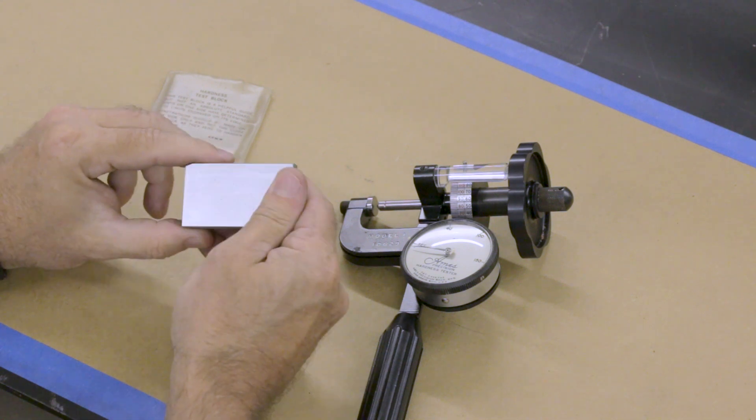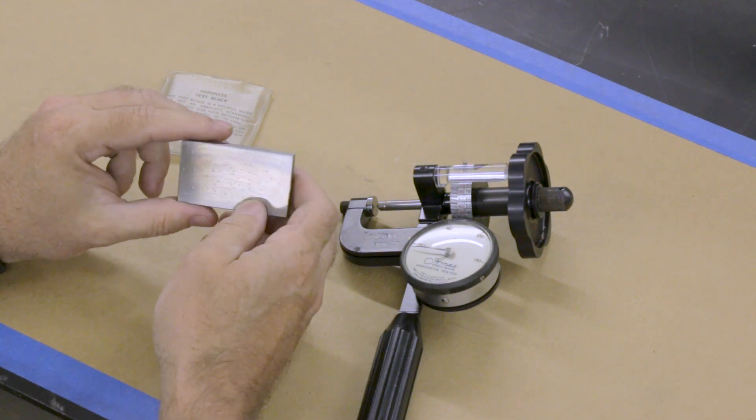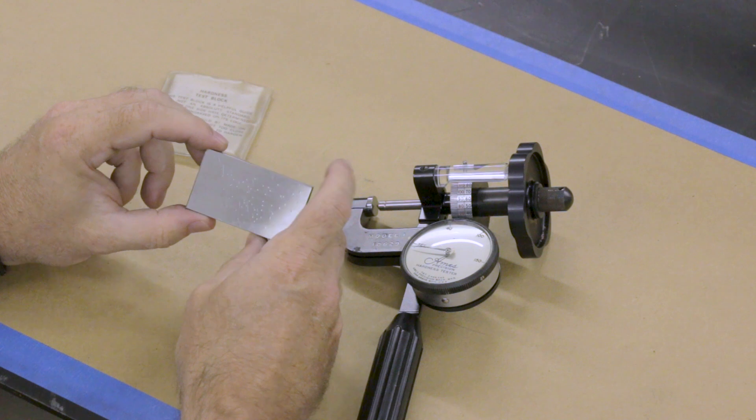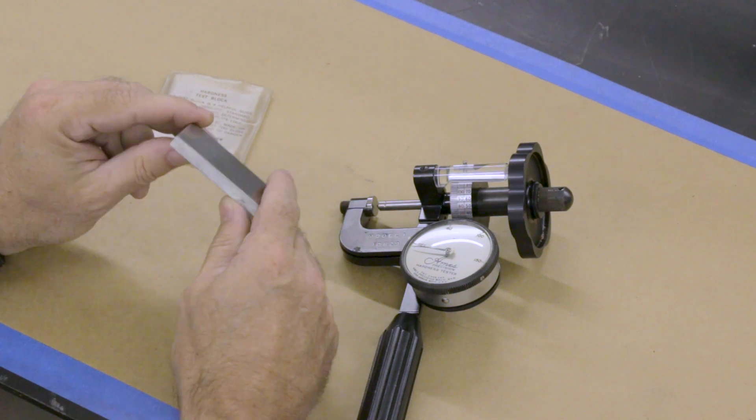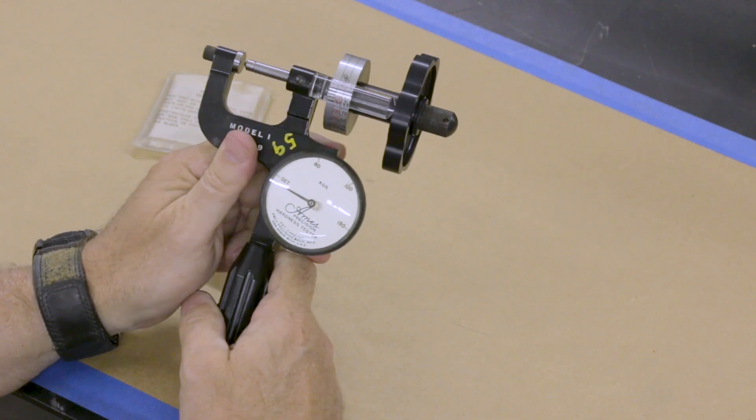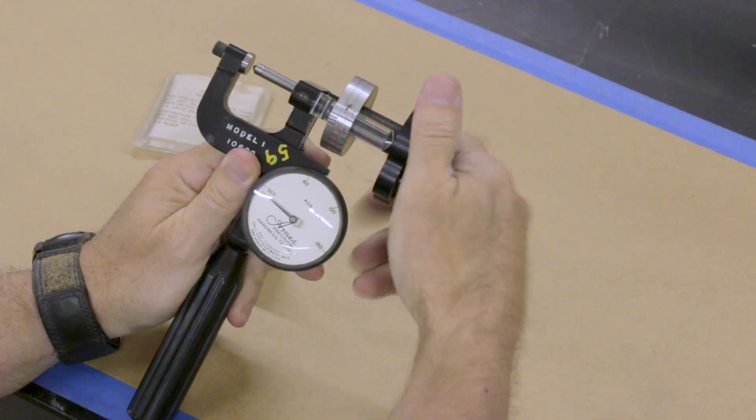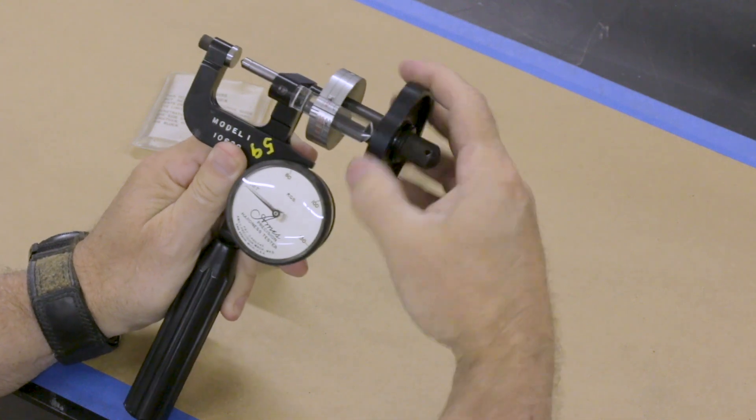So the first thing I do when I use this is I verify my hardness, or I verify my tester on this block, this test standard. The way this works is, first thing I'm going to do is I'm going to open this up far enough that I can get the test standard in it.